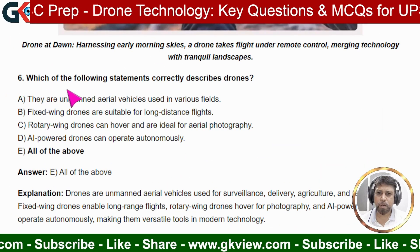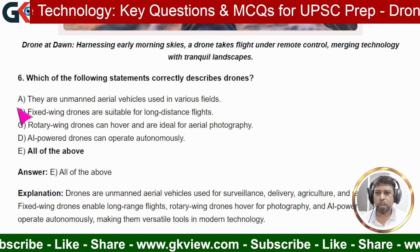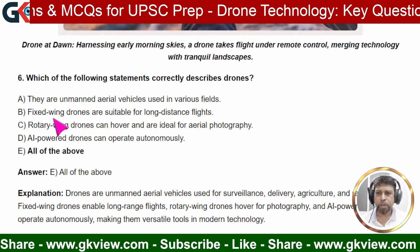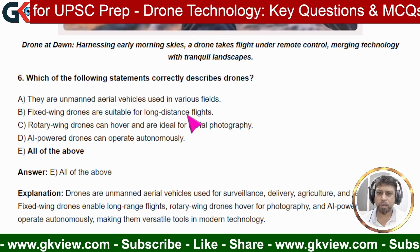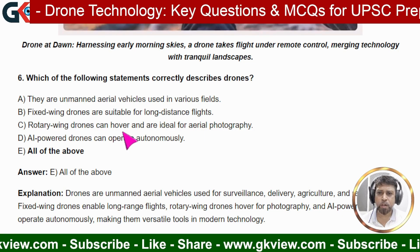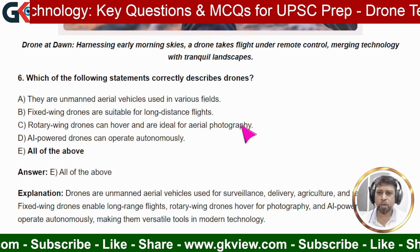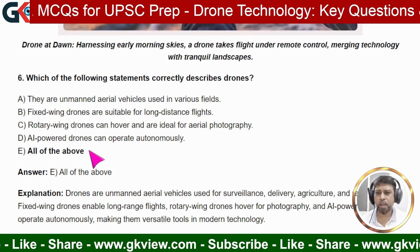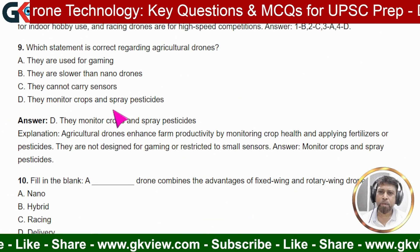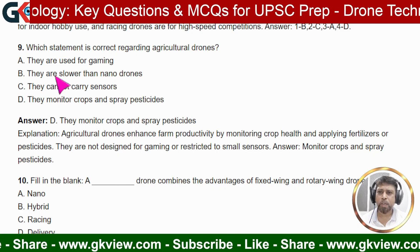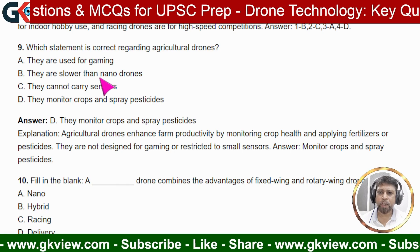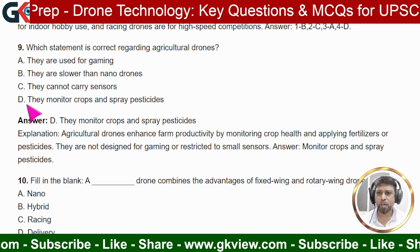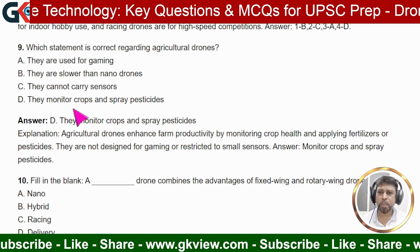Q5: Delivery drones are primarily used for — A) photography, B) transporting goods, C) crop monitoring, D) military surveillance. Answer: B — transporting goods. Q6: Which of the following statements correctly describe drones? They are unmanned aerial vehicles used in various fields; fixed-wing drones are suitable for long-distance flight; rotary-wing drones can hover and are ideal for aerial photography; AI-powered drones can operate autonomously. Answer: E — all of the above. Q7: Regarding agricultural drones — they monitor crops and spray pesticides. Answer: D.